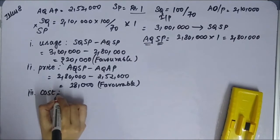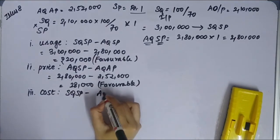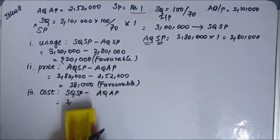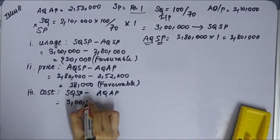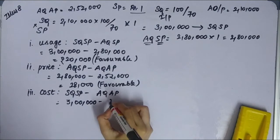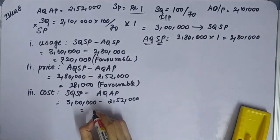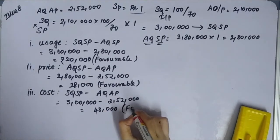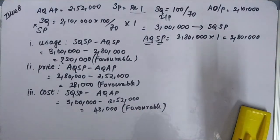Third, cost variance: material cost variance is SQSP minus AQAP. SQSP is 3 lakh, AQAP is 2 lakh 52,000. So 48,000 as favorable. That's it, your illustration number 8 is over.